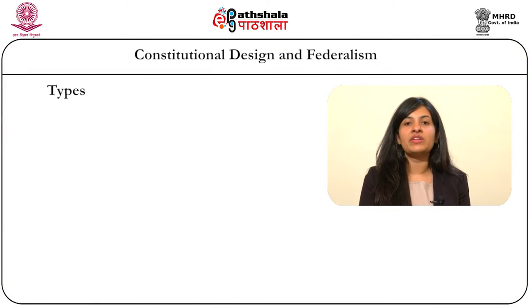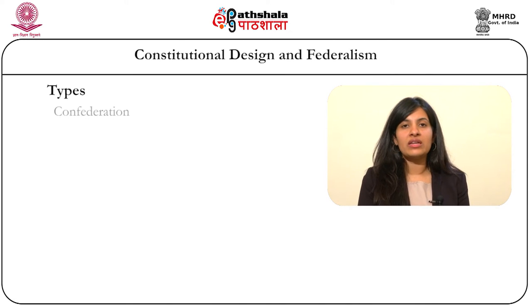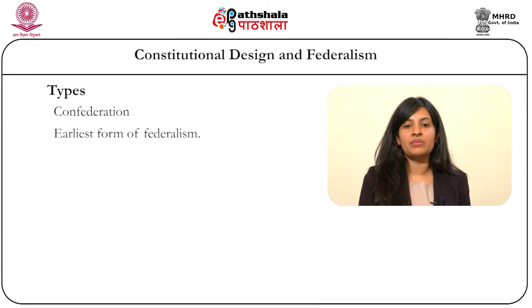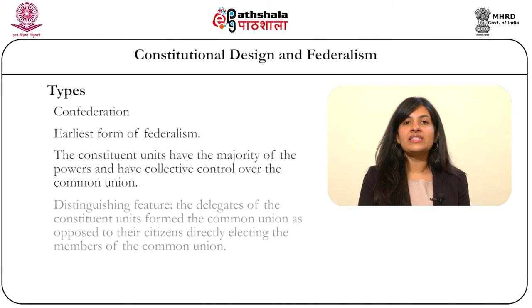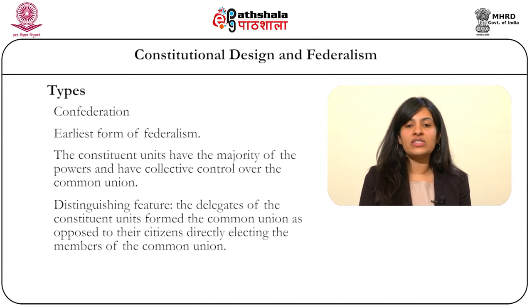Now we shall take a look at the different types of federal arrangements. A confederation can be said to be the earliest form of federalism. In this system, the constituent units that form the union would hold the majority of the powers and the units would maintain collective control over the common union. A distinguishing feature of a confederacy is that the delegates of the constituent units form the common union, as opposed to their citizens directly electing the members of the common union.